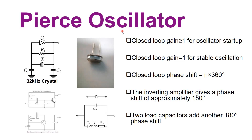A Pierce oscillator is an oscillator using the crystal resonator connected in a feedback loop. This circuit of the Pierce oscillator is shown in the figure — it creates a stable clock frequency of 32 kilohertz using the crystal resonator. Here, X1 represents the crystal symbol which is the resonator. U1 is a digital inverter circuit; its job is to invert the signal at the input. R1 is used to bias the amplifier, and C1 and C2 are there to provide the required phase shift to sustain the oscillation at the output node.